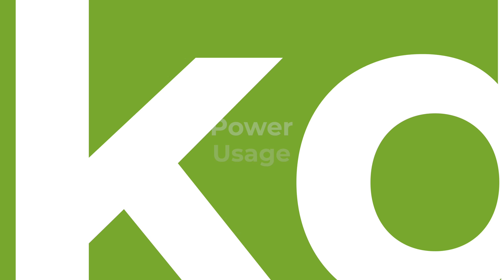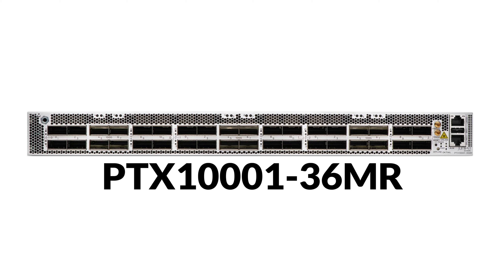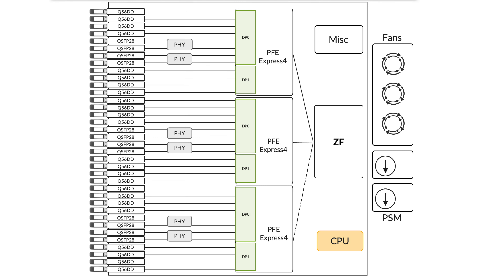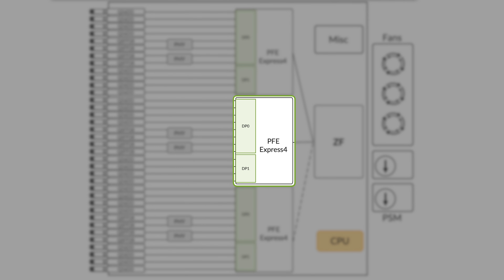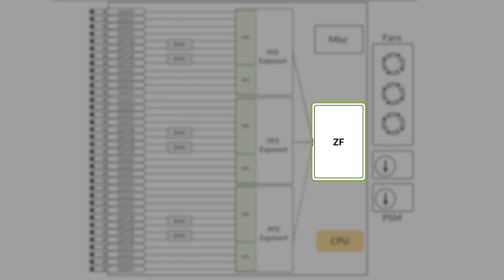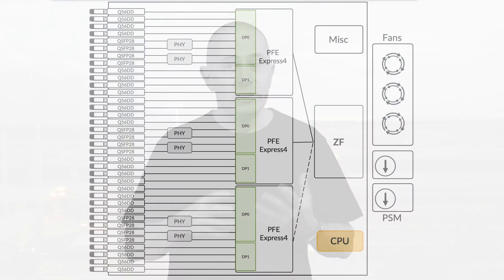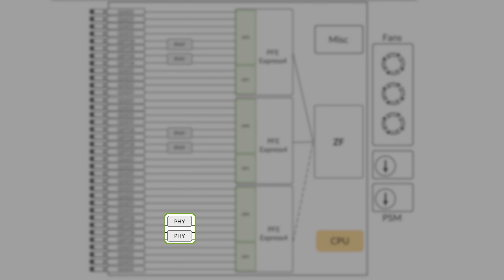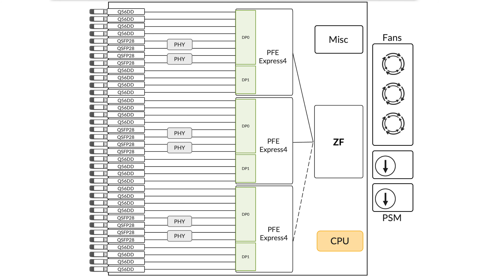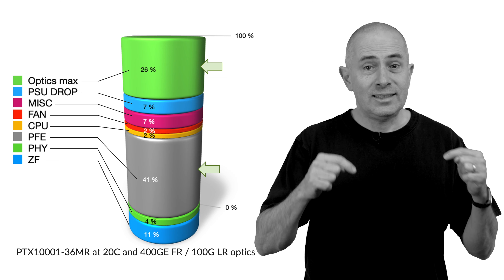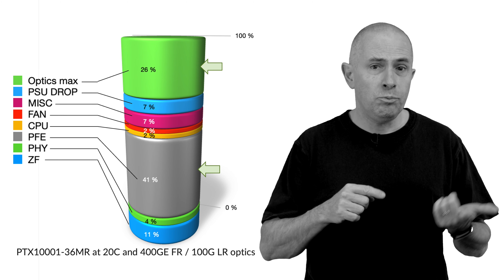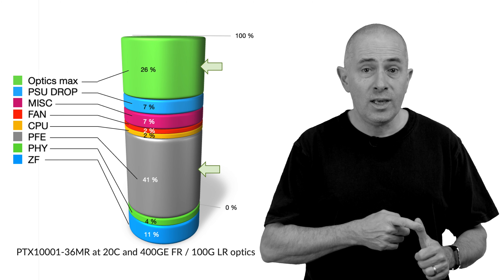Let's start with an example: the PTX-1001-36MR, a 1RU router made of 3 packet forwarding engines connected through a fabric ASIC. Since it offers a mix of 100GB and 400GB, certain ports are connected to a PHY — an Ethernet transceiver component between the optical cage and the PFE — that increases the fanout and port density. We noticed that at 20°C, the top two power consumers are the PFE and the optics.